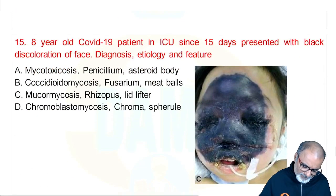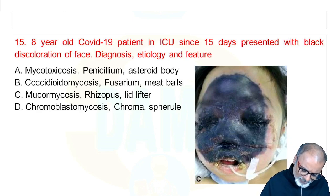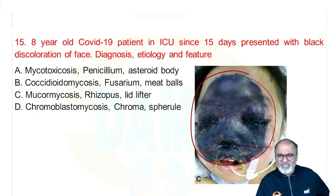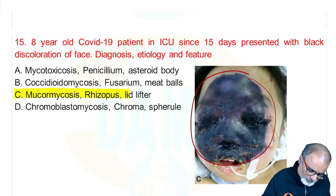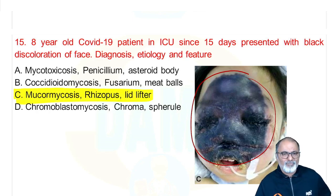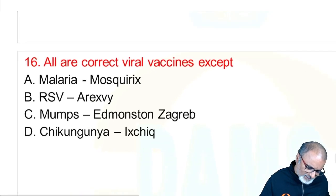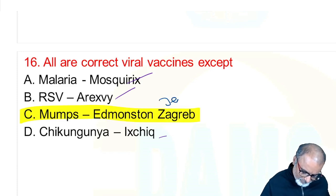An 8-year-old COVID-19 patient in ICU, 15 days post-infection, presents with black discoloration of face. It is caused by black fungus — but that is a misnomer. After the COVID era this became very famous: mucormycosis, caused by Rhizopus. It lifts the lid of the eye — we call it 'lid lifters.' It is not coccidioidomycosis or chromoblastomycosis (those produce copper penny bodies). Black facial discoloration — mucormycosis, Rhizopus.